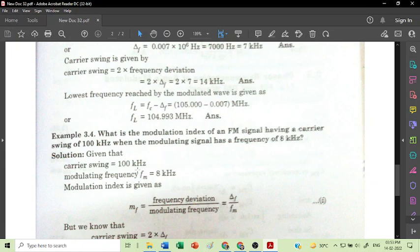Carrier swing is 100 kHz. Modulating frequency Fm is 8 kHz. And from this we can find out the modulation index.